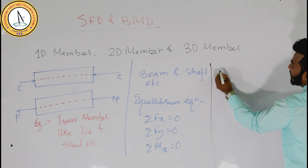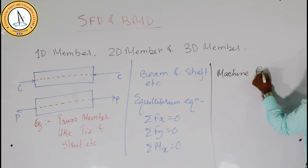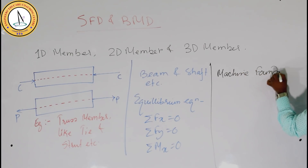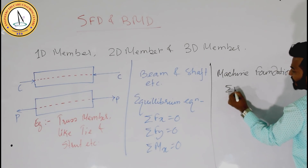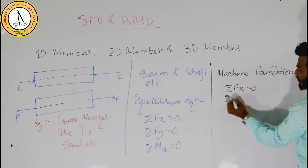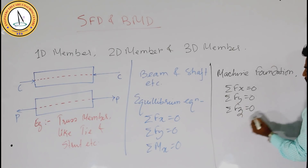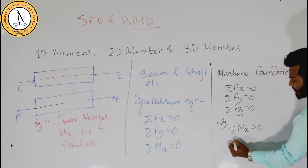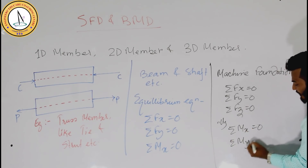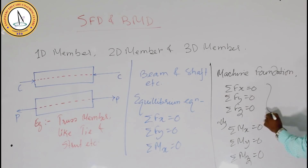In the case of 3D members, like a machine foundation, it is acted upon by three-directional forces. So it will have summation of Fx, summation of Fy, summation of Fz, all equal to 0. Similarly, summation of moment in x-direction, y-direction, and z-direction will each be 0. So in total, 6 equilibrium equations will be there in the case of a 3D member.